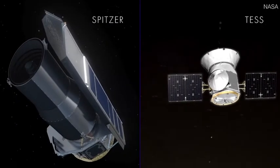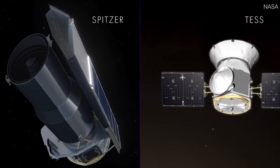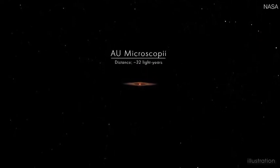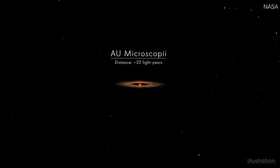NASA's TESS and Spitzer Observatories have found a long-sought world orbiting the star AU Microscopii, or AUMIC for short. Located about 32 light-years away, the system will be a touchstone for understanding planetary evolution for decades to come.